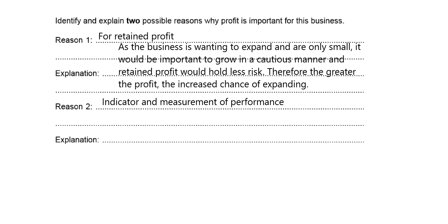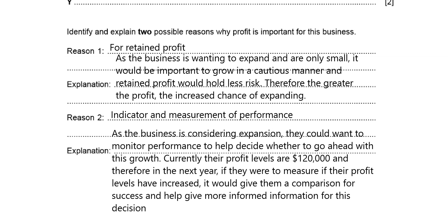For the next point, I had to be careful not to repeat the retained profit angle. Many students might say investment in machinery for flow production, but that's really similar to retaining profit for expansion. So I've gone a different route to maximise marks. My second point is a more generic reason — profit as an indicator and measurement of performance. Because this reason is generic, the application must provide the explanation. As the business is considering expansion, it could monitor performance to decide whether to go ahead with growth. Currently their profit level is $120,000, so in the next year, if profit levels have increased it provides a comparison for success and more informed decision-making.